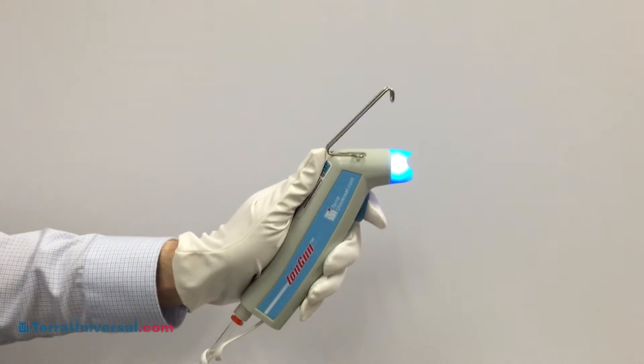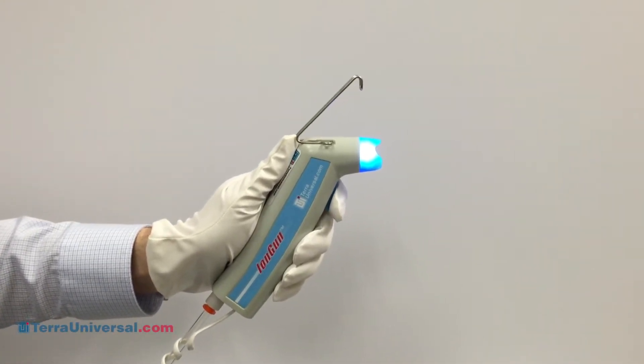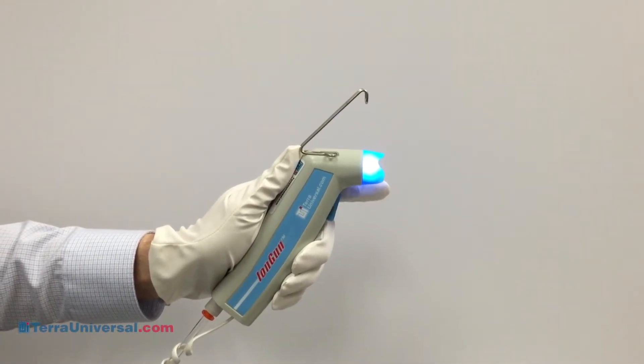When the trigger is pulled, the air flows through the nozzle and propels the positive and negative ions to the target surface.